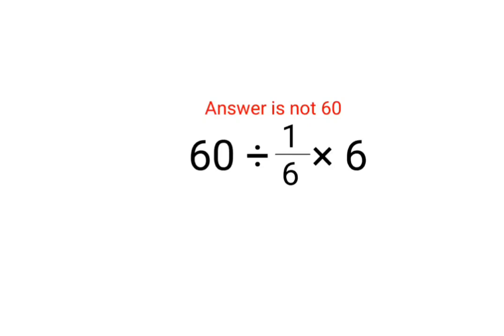Welcome everyone. Today we are going to understand why the answer for this question is not supposed to be just 60. We have 60 ÷ 1/6 × 6. A lot of people think this is so easy, the 6s are canceling, so we just have 60 ÷ 1, the answer is supposed to be 60.